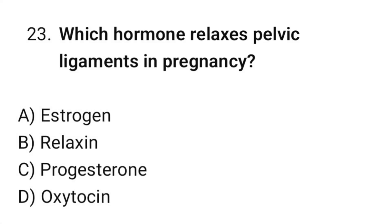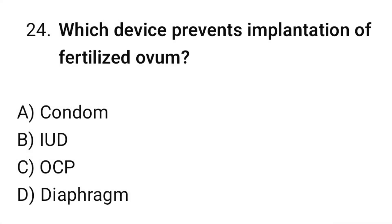Question No. 23: Which hormone relaxes pelvic ligaments in pregnancy? The correct option is B. Relaxin. Question No. 24: Which device prevents implantation of a fertilized ovum? The correct option is B. IUD.